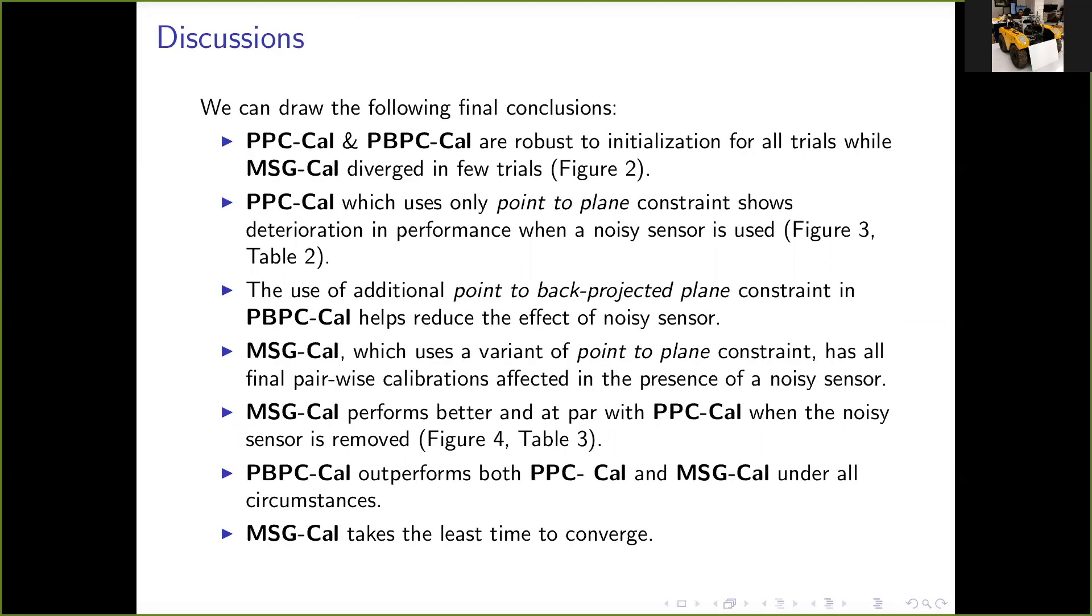After analyzing all experimental results, we can draw the following conclusions. PPC-Cal and PBPC-Cal are robust to initialization for all trials, while MSG-Cal diverges in a few. PPC-Cal, which uses only point-to-plane constraint, shows deterioration in performance when noisy sensor is used. PBPC-Cal shows better performance in the presence of a noisy sensor because it uses additional geometric constraints. MSG-Cal, which uses a variant of point-to-plane geometric constraint, has all pairwise calibrations affected in the presence of a noisy sensor, but performs at par with PPC-Cal when the noisy sensor is removed. MSG-Cal takes the least time to converge when compared to other two methods.